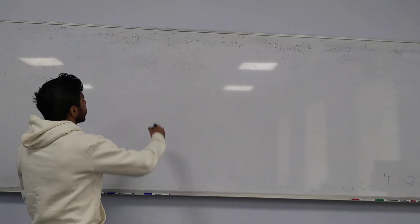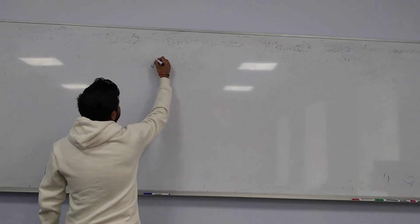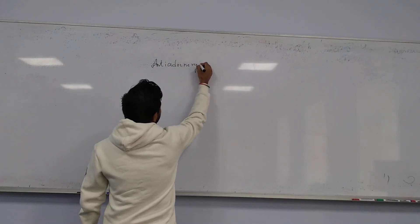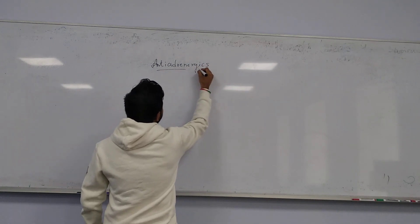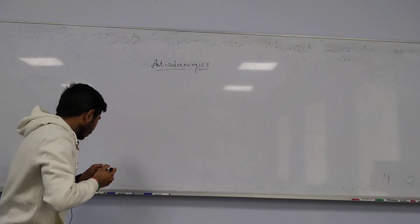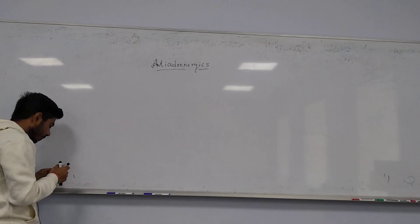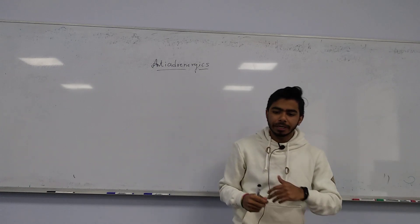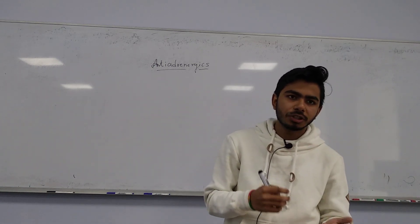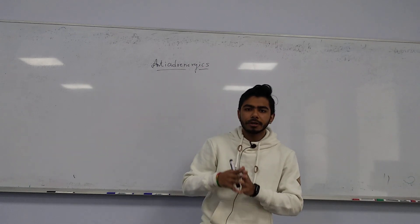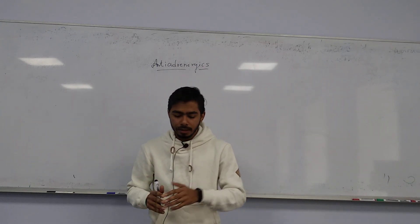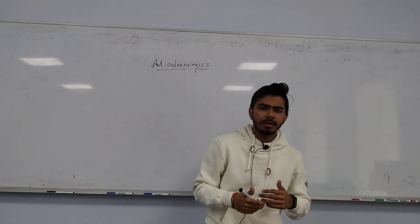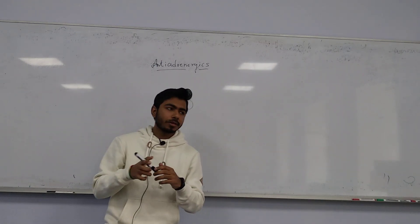Today's topic is anti-adrenergic drugs. Anti-adrenergic drugs block adrenergic receptors and interfere with the sympathetic nervous system, usually blocking it. Now, remind me about the receptors for the adrenergic system — alpha and beta.